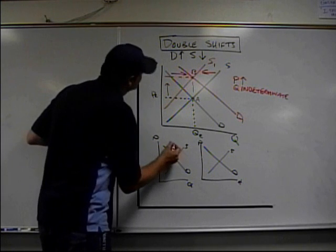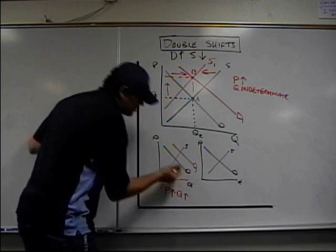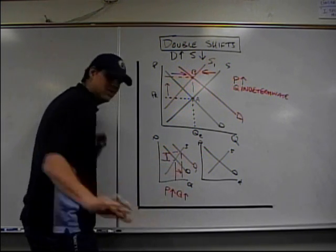A demand increase will shift the demand to the right. Price goes up, quantity goes up. That's what my curve says. Take a look. Price goes up, quantity goes up. Done. That's easy.